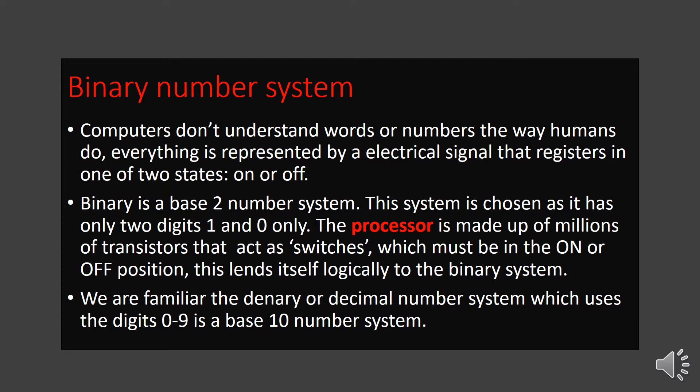We should know about the processor, which is the brain of the computer. The processor processes the instructions and data we give to the computer. The processor has millions of transistors which act as switches. Switches have only two states — on or off. On is represented by binary digit 1 and off by binary digit 0. The processor processes the instructions given by the program and produces the result.